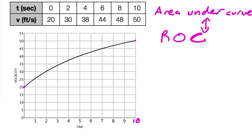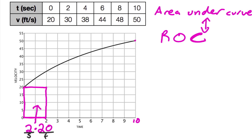Let's draw a couple of rectangles like when we did the Riemann sum. To find the area of this first rectangle, I would multiply the width — which is two — times the height, which is 20. But now take a look at the units: this is two seconds times 20 feet per second. When you multiply two seconds times 20 feet per second, you get feet.